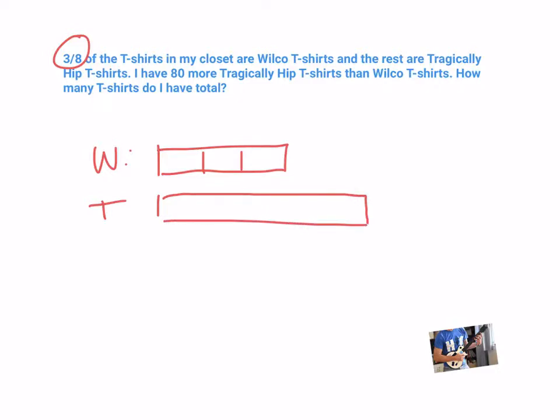So we have 1, 2, 3, 4, 5, 6, 7, 8 — correct? So we have 1, 2, 3 blocks, 4, 5, 6, 7, 8 blocks. Good stuff.